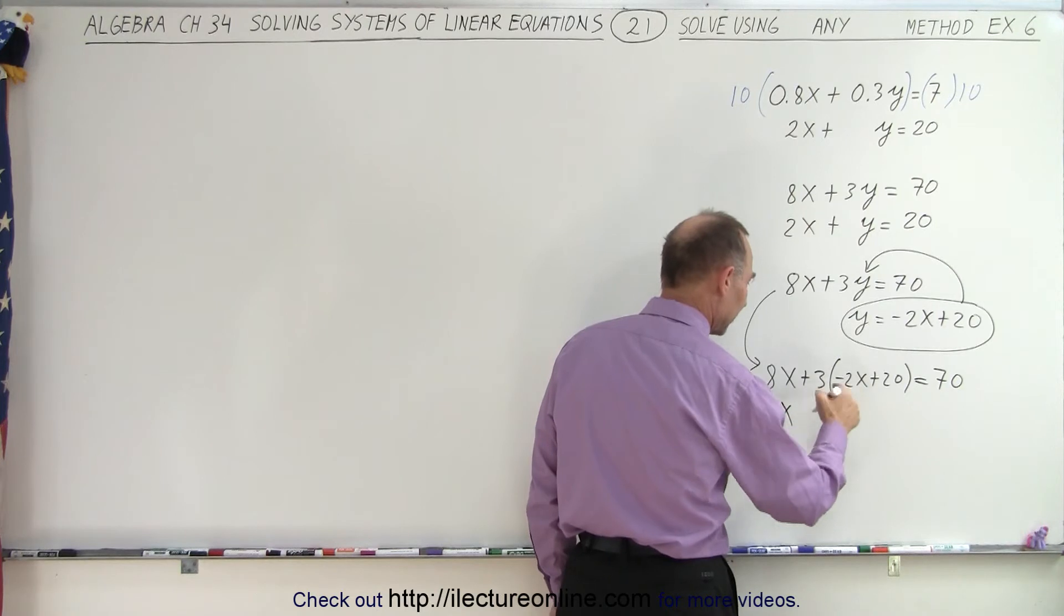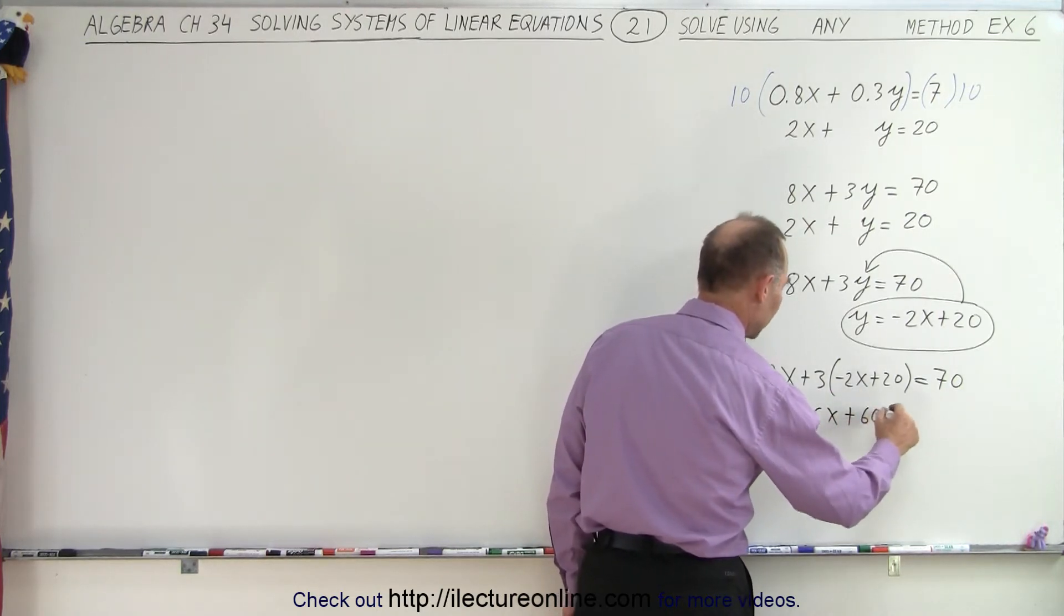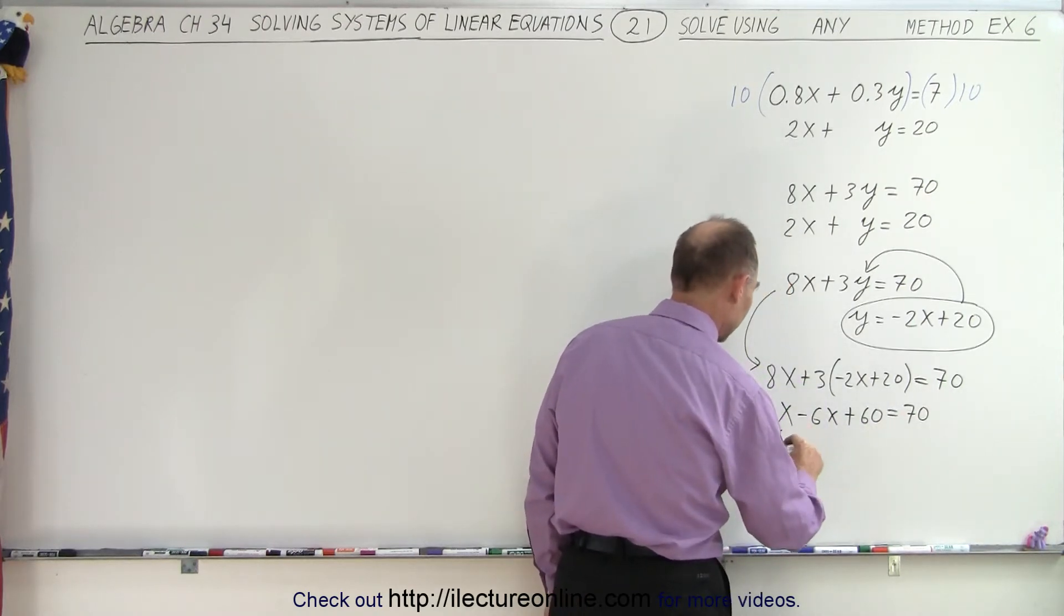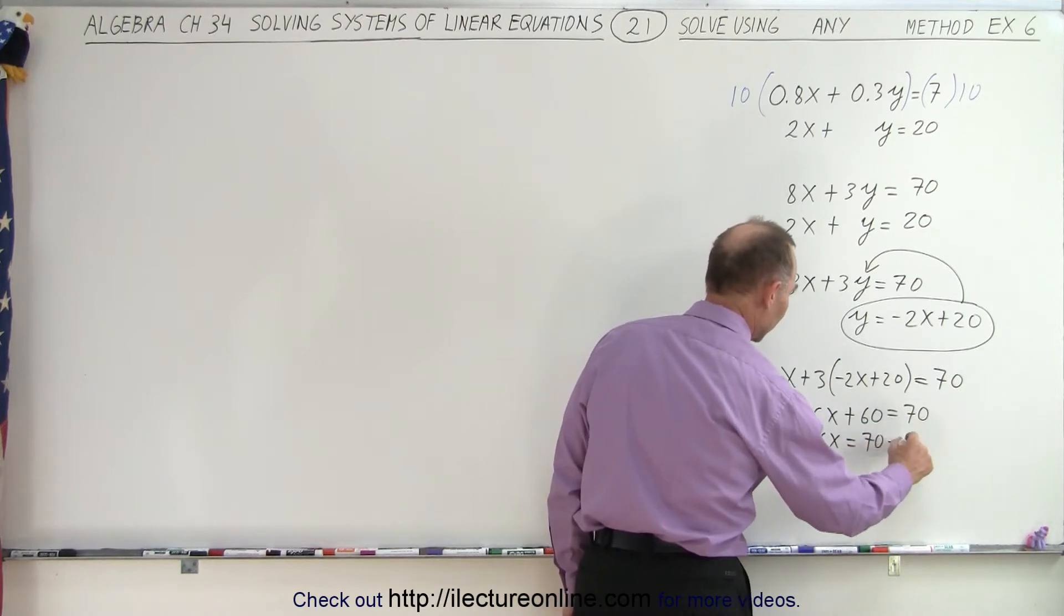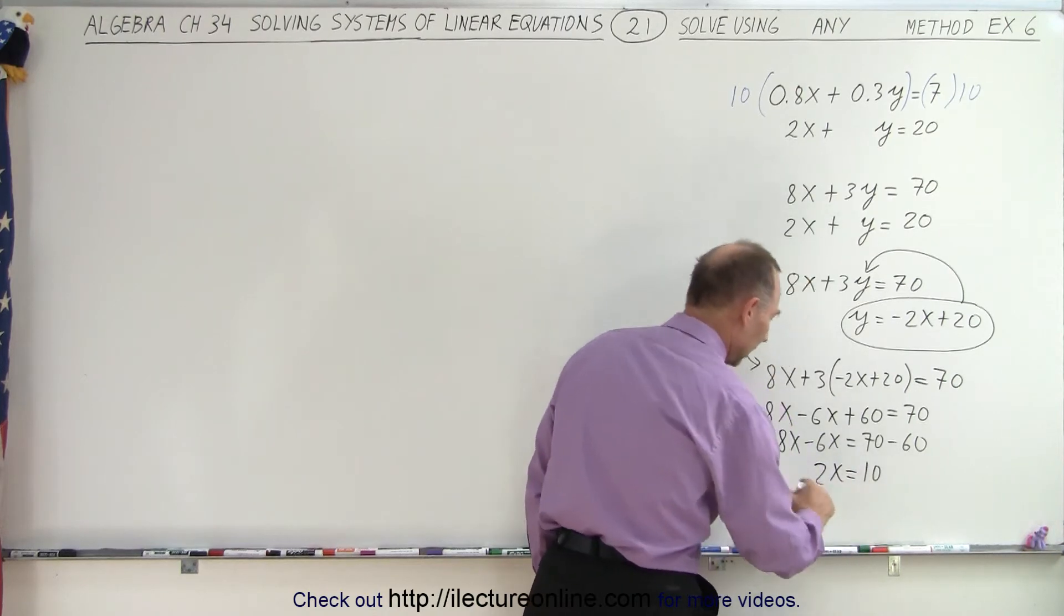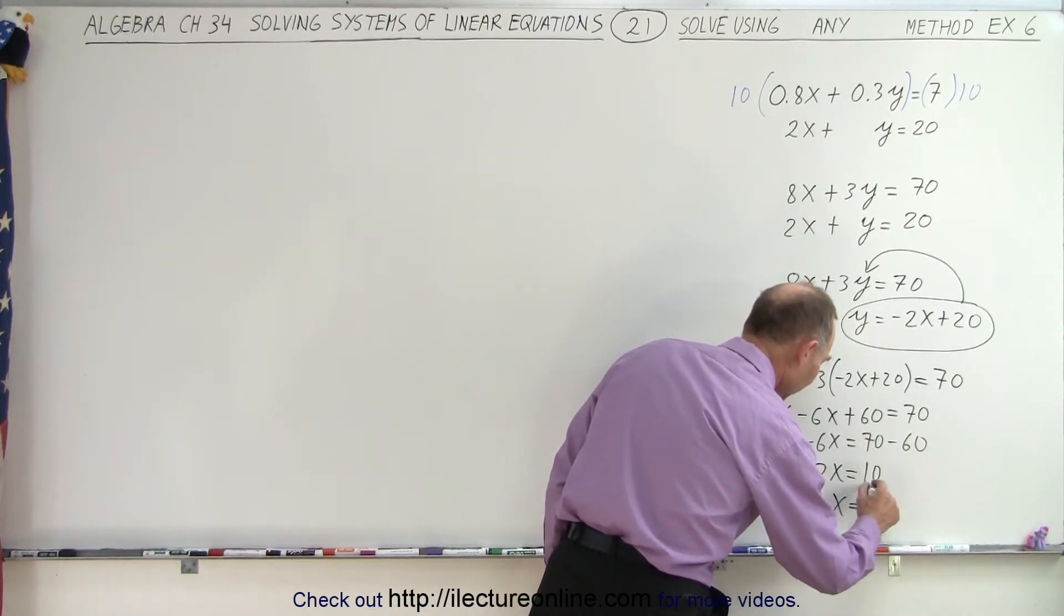So 8x plus 3 times the negative 2, that would be minus 6x, plus 60 equals 70. So move the 60 over to this side. We get 8x minus 6x equals 70 minus 60. Then combine like terms. 2x is equal to 10. Divide both sides by 2. We get x equals 5.